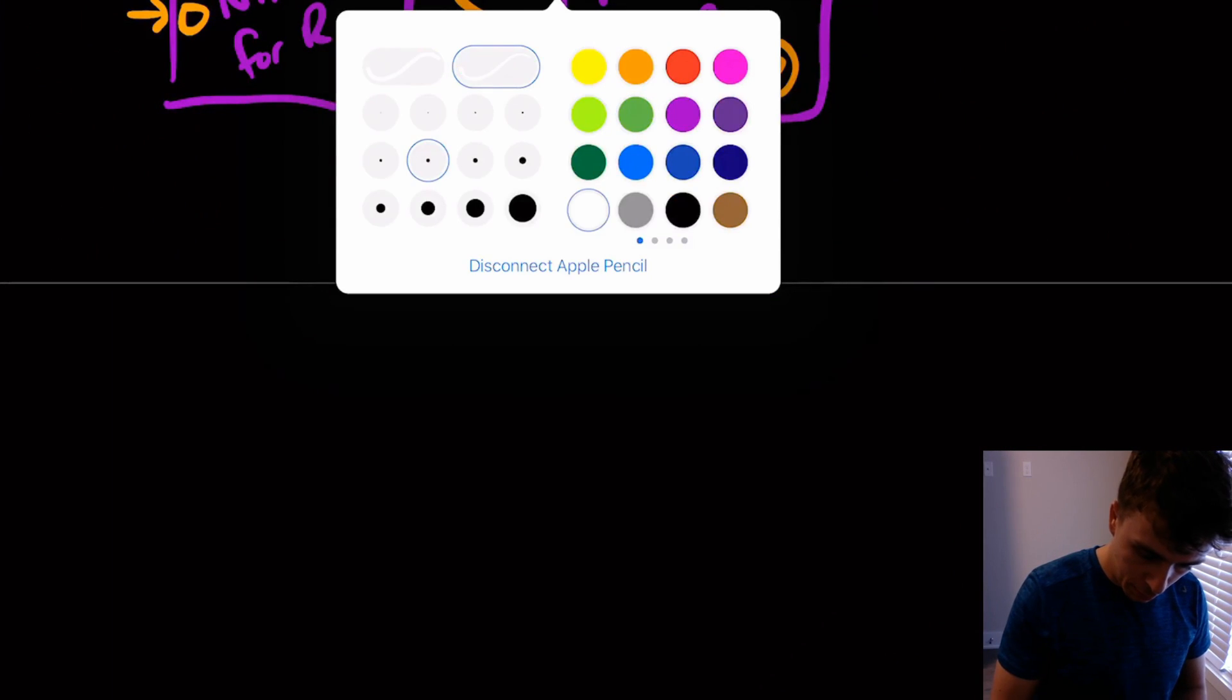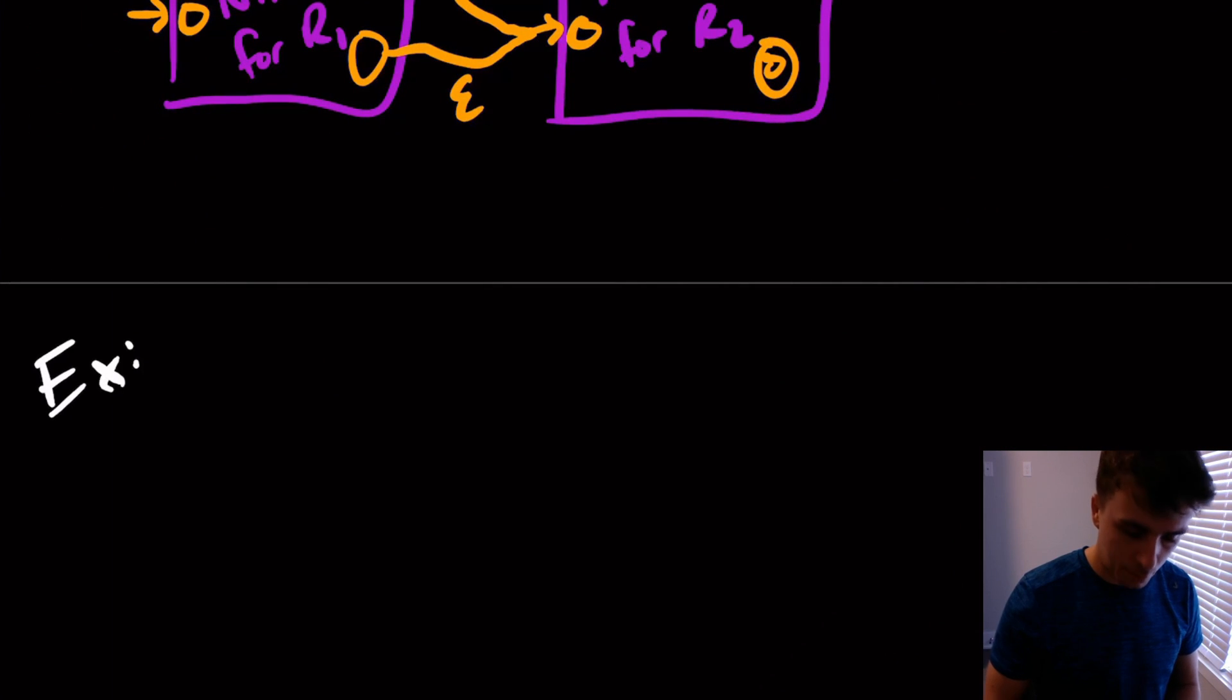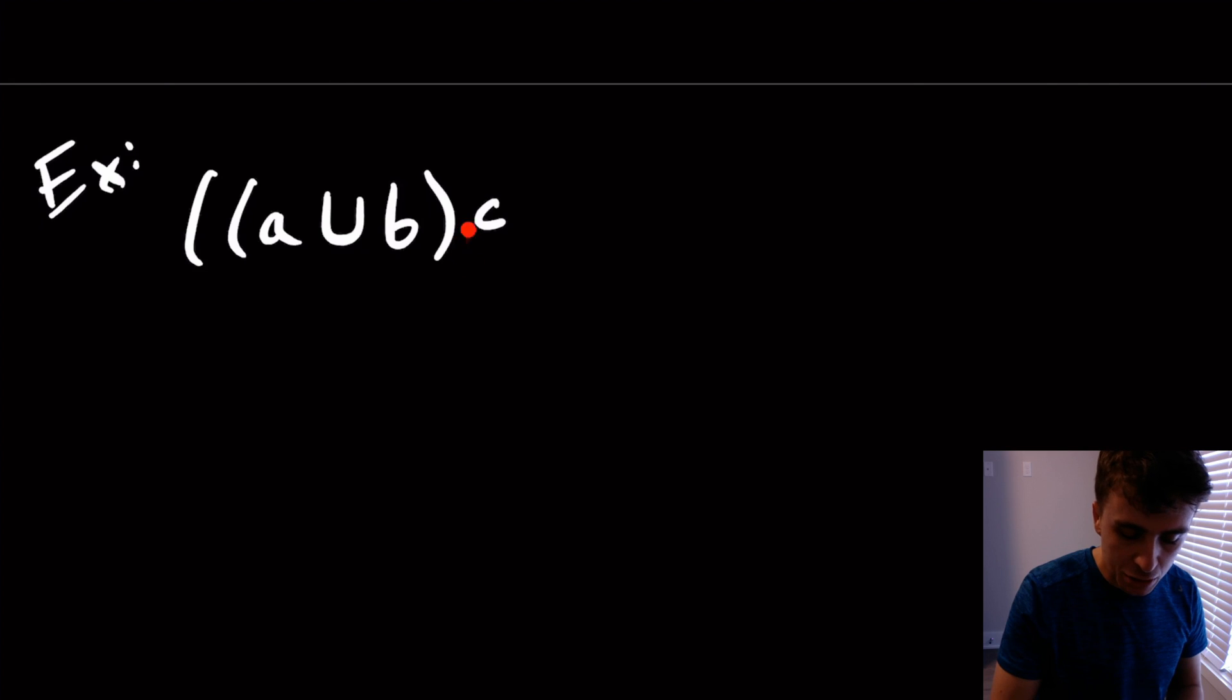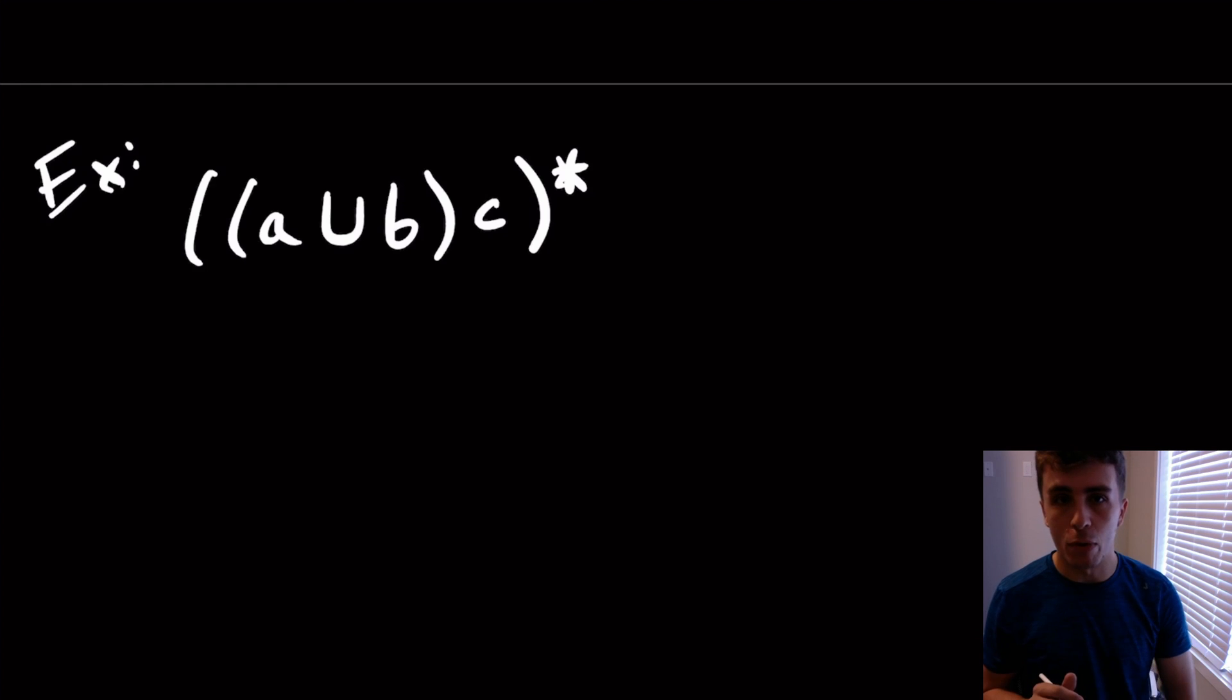So here is an example. I'm going to make this totally off the cuff. Let's say we have A union B in parentheses, concatenated with C, and star the whole thing. The reason I want to do this is that we highlight all three of the operations that are used.